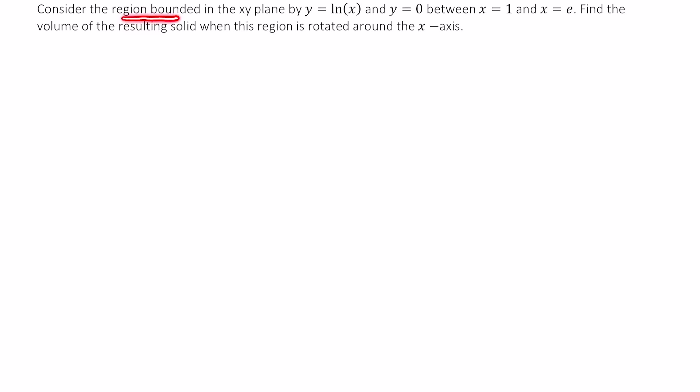So let's consider the region bounded in the xy plane, that is the Cartesian plane, by y equals ln of x and y equals 0 between x equals 1 and x equals e. Let's find the volume of the resulting solid when this region is rotated about the x-axis.